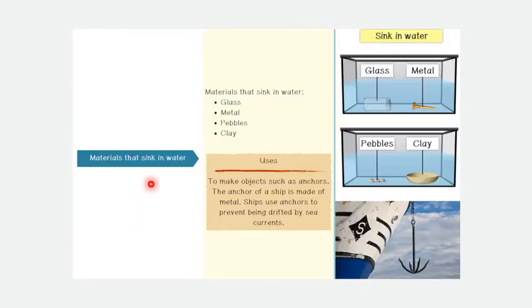Now materials that sink in water. Materials that sink in water such as glass, metal, pebbles, and clay. Uses of materials that sink in water to make objects such as anchors. The anchor of a ship is made of metal. Ships use anchors to prevent being drifted by sea currents. These are the examples of materials that sink in water: glass, metal, pebbles, and clay.